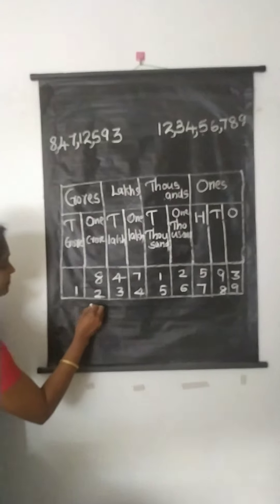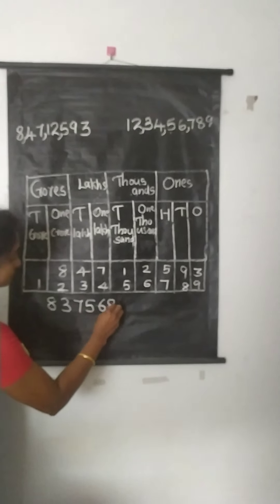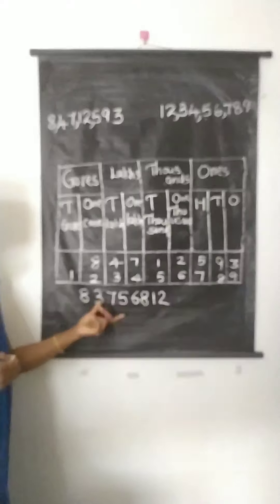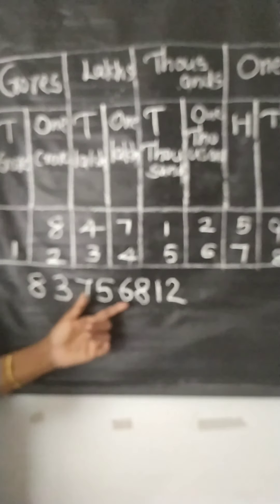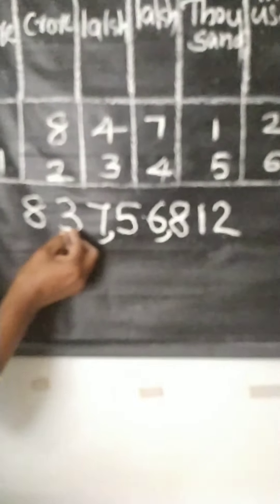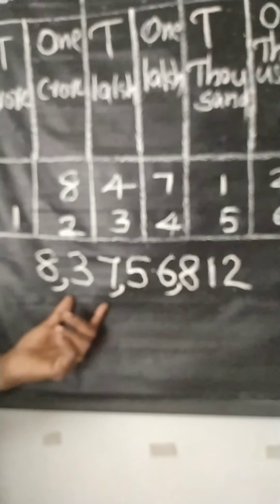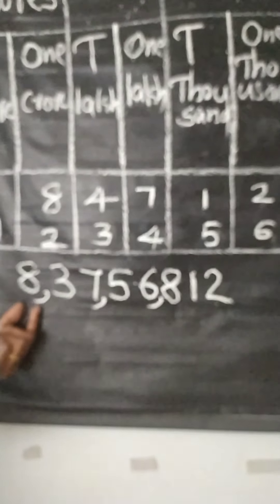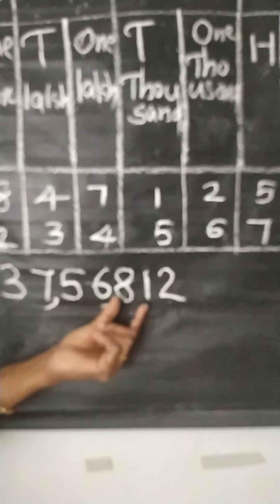Now let us do one example. How can we put commas inside this numeral? In the Indian system of numeration, the first comma comes after 3 digits from the right, the second comma after 5 digits, and the third comma after 7 digits. Therefore, the first comma comes in between 6 and 8, the second comma comes in between 7 and 5, and the last comma comes in between 8 and 3. It can be read as 8 crores, 37 lakhs, 56,812.